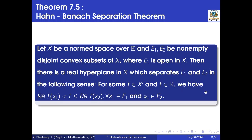Next, Theorem 7.5, known as the Hahn-Banach separation theorem. Let x be a normed space over k and e1, e2 be non-empty disjoint convex subsets of x, where e1 is open in x. Then there is a real hyperplane in x which separates e1 and e2 in the following sense: for some f belonging to x-star and t belonging to r, we have real part of f of x1 less than t less than or equal to real part of f of x2, for all x1 in e1 and x2 in e2.